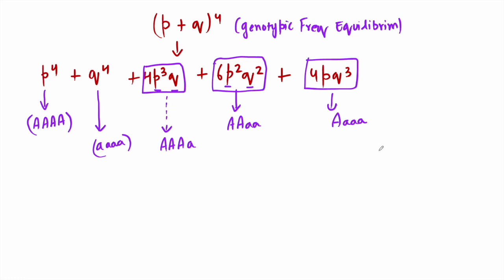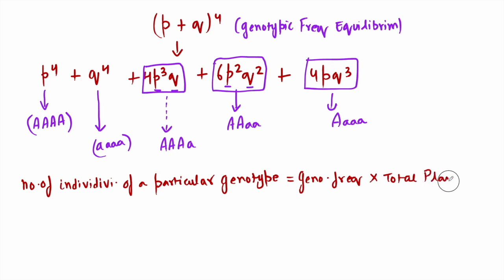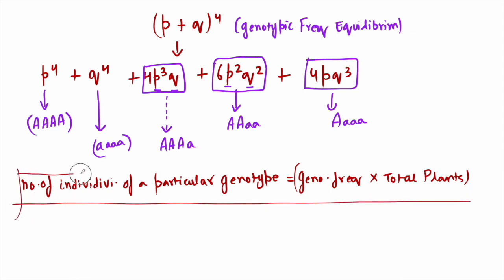The examiner is asking us to find the number of individuals of a particular genotype, not just the genotypic frequency. The number of individuals of a particular genotype equals the genotypic frequency of that genotype multiplied by the total number of individuals — in this case, 1000 plants. This is basic mathematics: frequency multiplied by total gives the absolute number in that category.